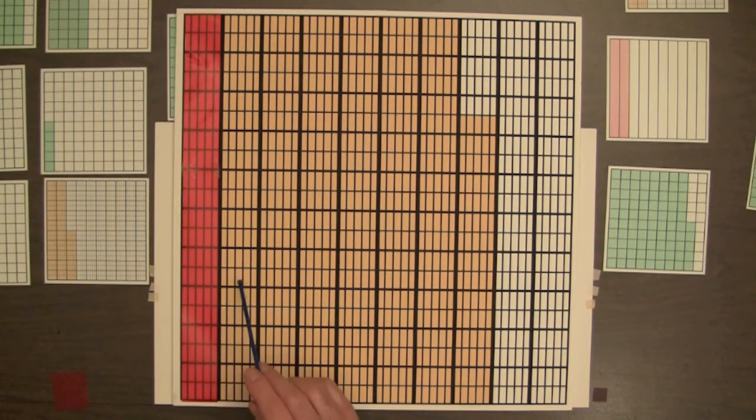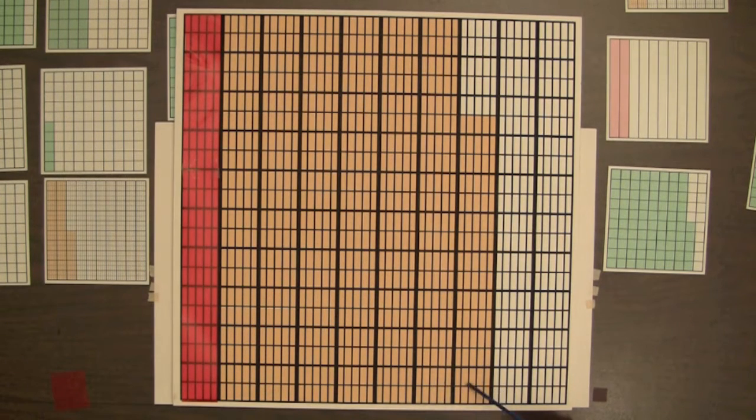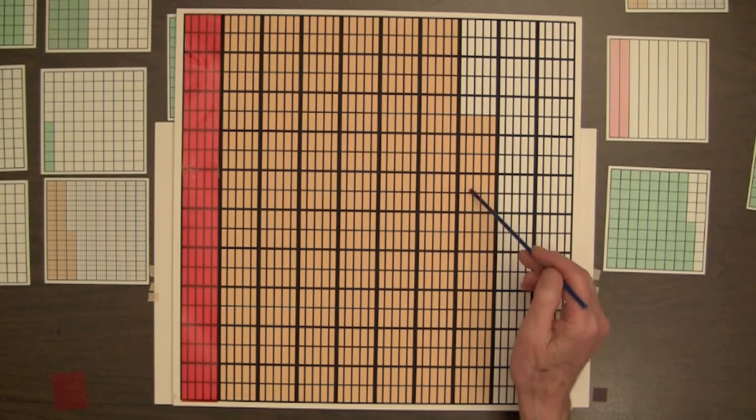So there's 100, 200, 3, 4, 5, 6, 700. And then we've got 10, 20, 30, 40, 50, 60, 75.